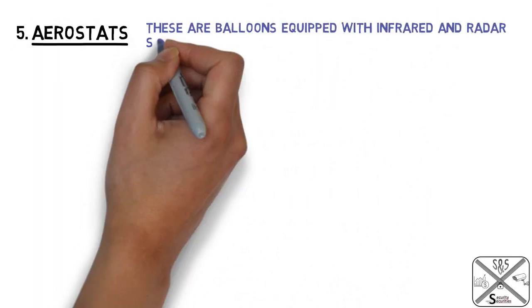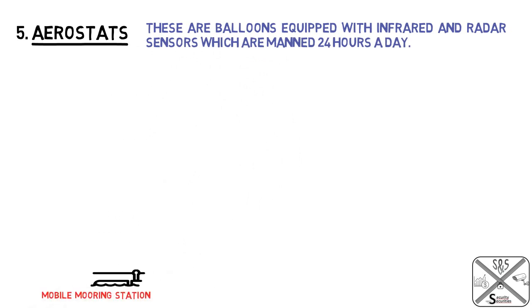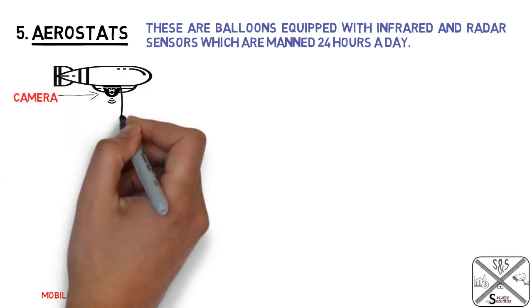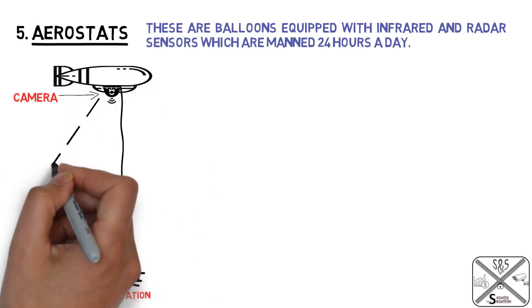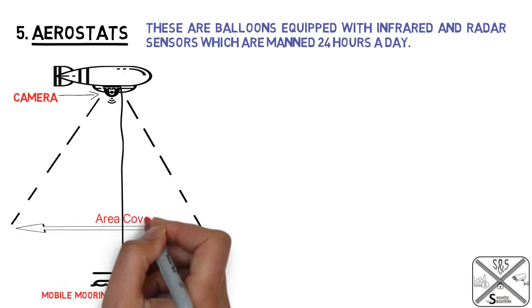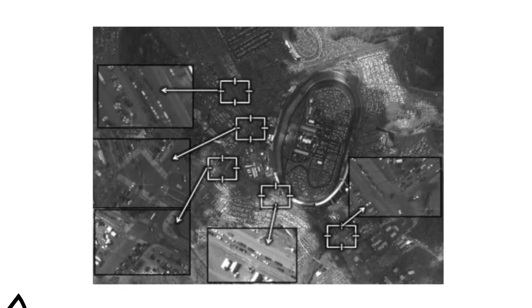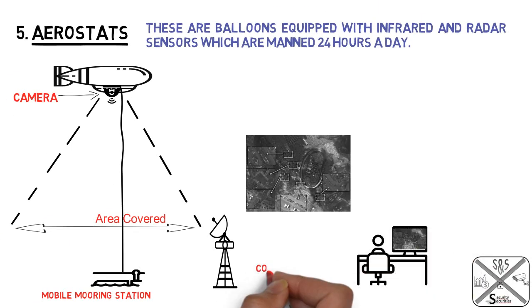Now moving to aerostats. These are balloons equipped with infrared and radar sensors which are operated 24 hours a day. Aerostats provide real-time HD images of the surrounding area day or night and are strategically placed for surveillance purposes. Images and audio captured by the balloons are sent electronically through a secure system to a mobile monitoring station.